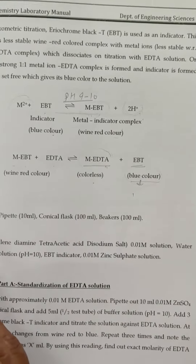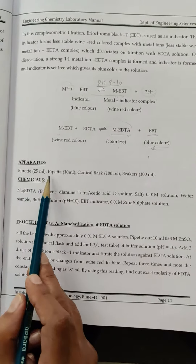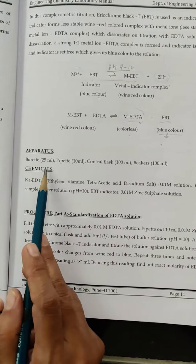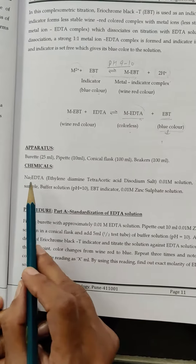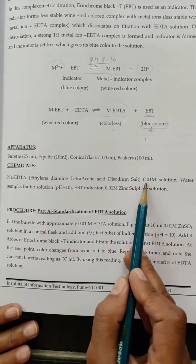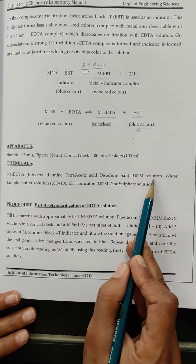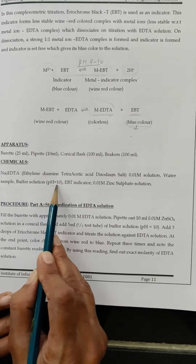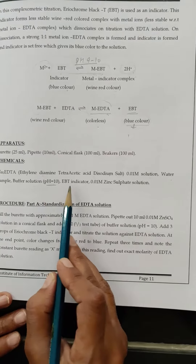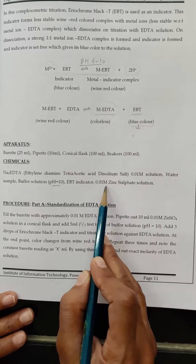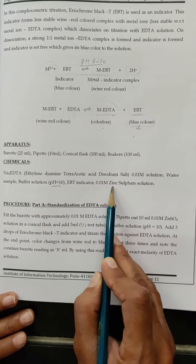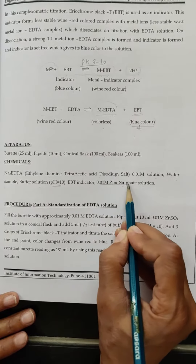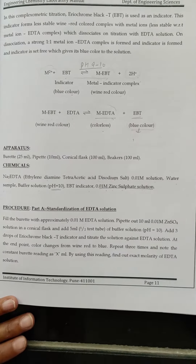The apparatus used in this titration are: burette, pipette, conical flask, and beaker. The chemicals needed are: disodium salt of EDTA solution 0.01 molar, water sample, buffer solution of pH 10 basic buffer, EBT indicator, and 0.01 molar zinc sulphate solution. The zinc sulphate solution is used for the standardisation of EDTA.